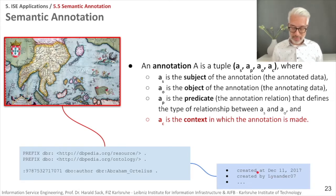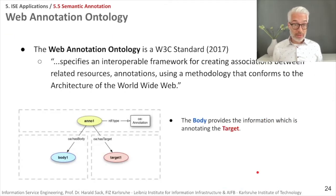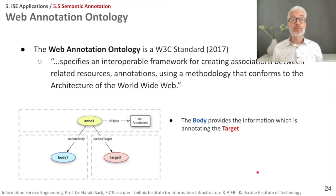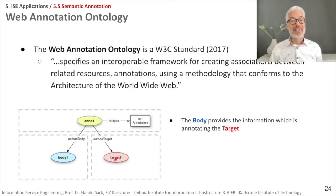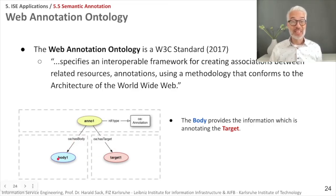There already exists a web standard for this kind of annotation: the Web Annotation Ontology, which became a W3C standard in 2017. It specifies an interoperable framework for creating associations between related resources using a methodology that conforms to the architecture of the World Wide Web. Annotations consist of a body — the annotating data — and a target — the thing that is annotated.